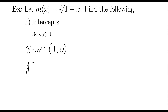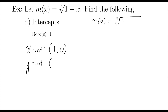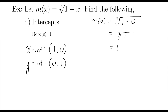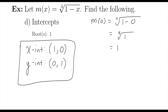The y-intercept is going to be found by plugging in 0 for x. So the fourth root of 1 minus 0 — that would be the fourth root of 1. And of course, the fourth root, or any root, of 1 is just going to be 1. So my y-intercept is the point (0, 1), and my x-intercept is the point (1, 0).